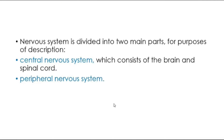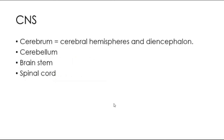The nervous system is divided into two main parts for the purpose of description: the central nervous system and the peripheral nervous system. The central nervous system basically consists of the brain and spinal cord, whereas the peripheral nervous system mainly contains the cranial nerves and spinal nerves.